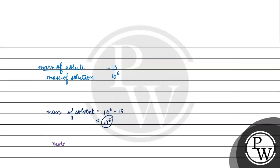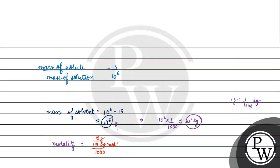Now we have to calculate molality. Mass of solvent is 10⁶ grams — since 1 gram equals 1/1000 kg, 10⁶ grams equals 10³ kg. Molality equals number of moles of solute divided by mass of solvent in kg. Number of moles equals mass of solute divided by molar mass of CHCl3, which is 119 g/mol. So molality equals 15/119 moles divided by 10³ kg.